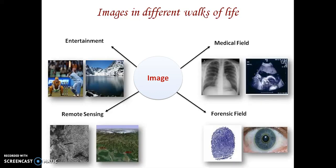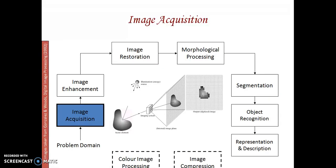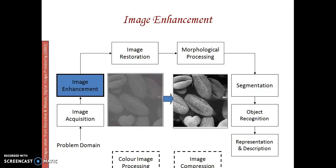Images are processed in fields such as entertainment, medical, forensic, and remote sensing. The first step is image acquisition — we capture the image based on the problem and application. An image is a combination of illumination and reflection. The next step is image enhancement, where we enhance the contrast and brighten the image using image enhancement techniques.